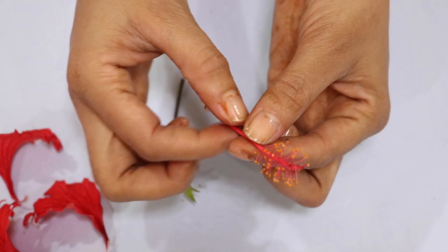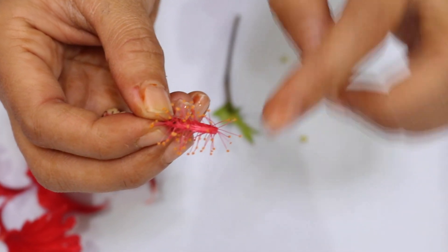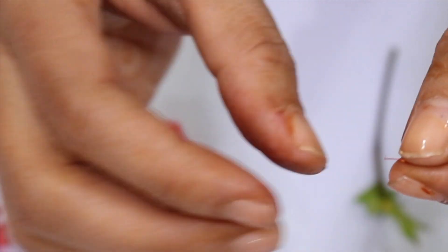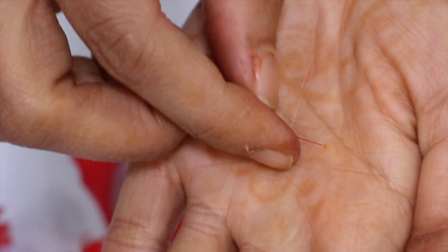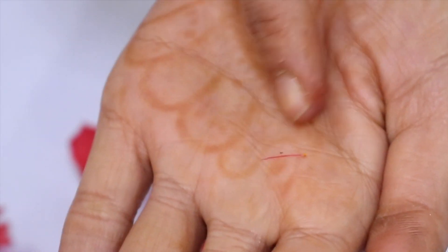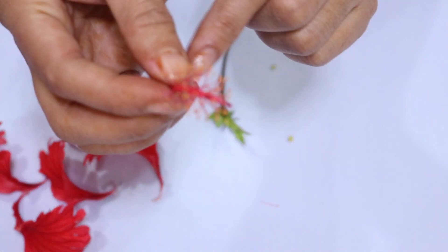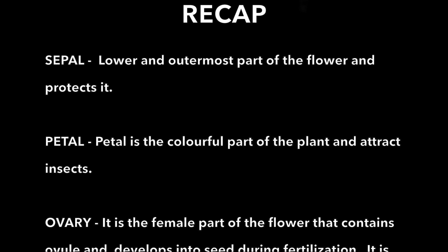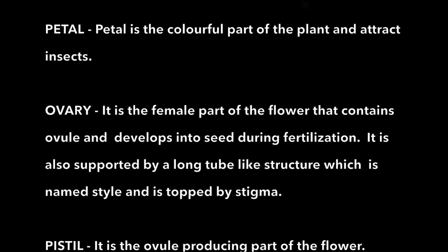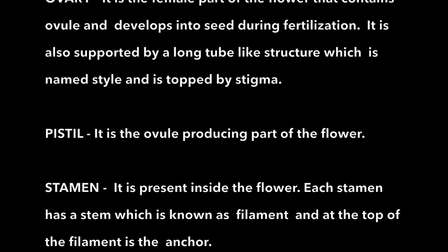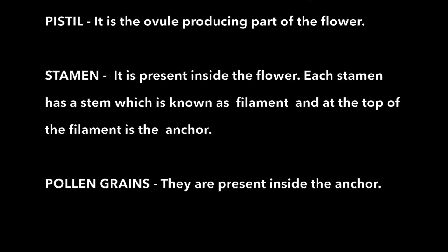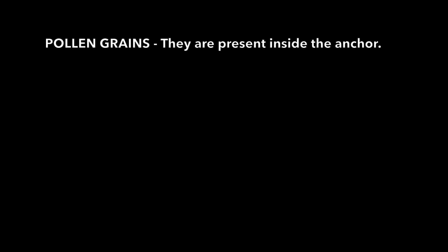The yellow colored parts are the anthers and are the male part of the flower. Thank you. If you have any suggestions for me, leave them in the comment section below. Bye.